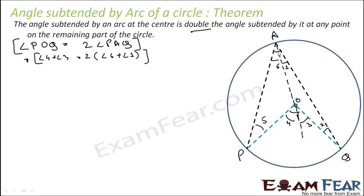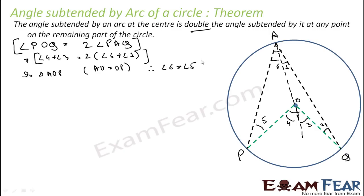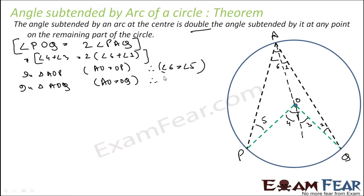In triangle AOP, AO equals OP (both radii), therefore angle 6 equals angle 5. Similarly, in triangle AOQ, AO equals OQ (both radii), therefore angle 1 equals angle 2. These two equations we have obtained.